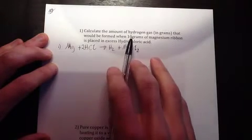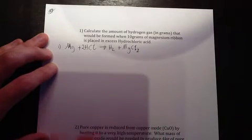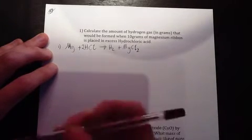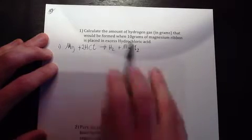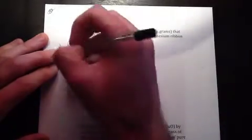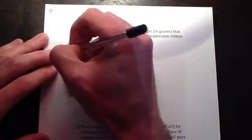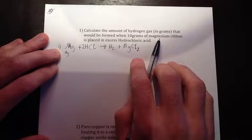Now, we're given a certain amount of magnesium ribbon, so we're given 10 grams. What I like to do is I like to write down what information I get underneath each reactant here, or each species in our equation. So 10 grams of magnesium.